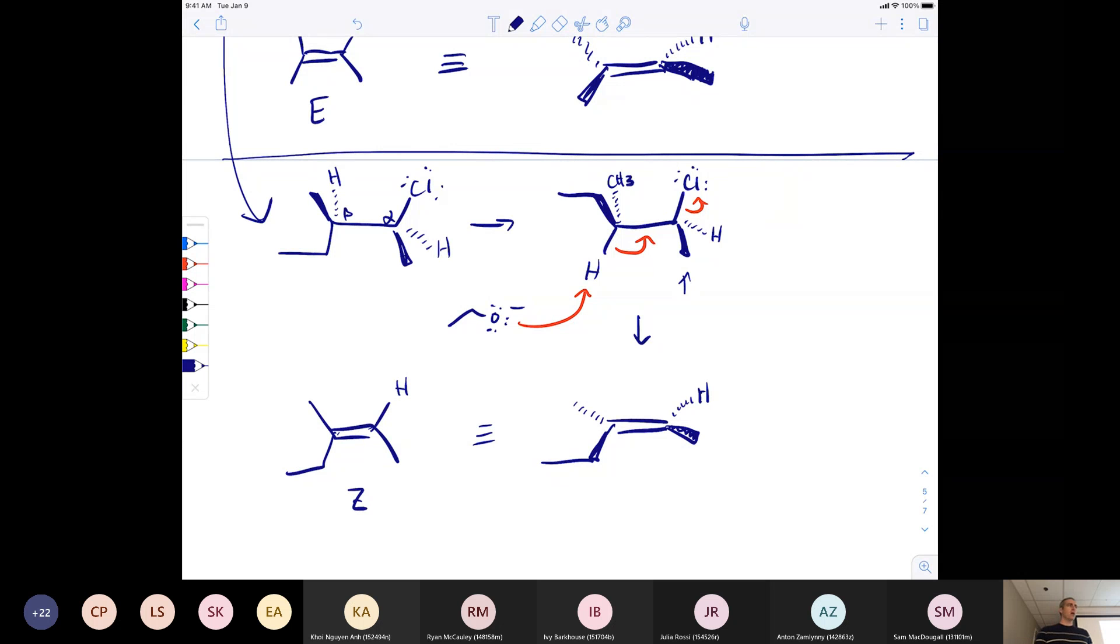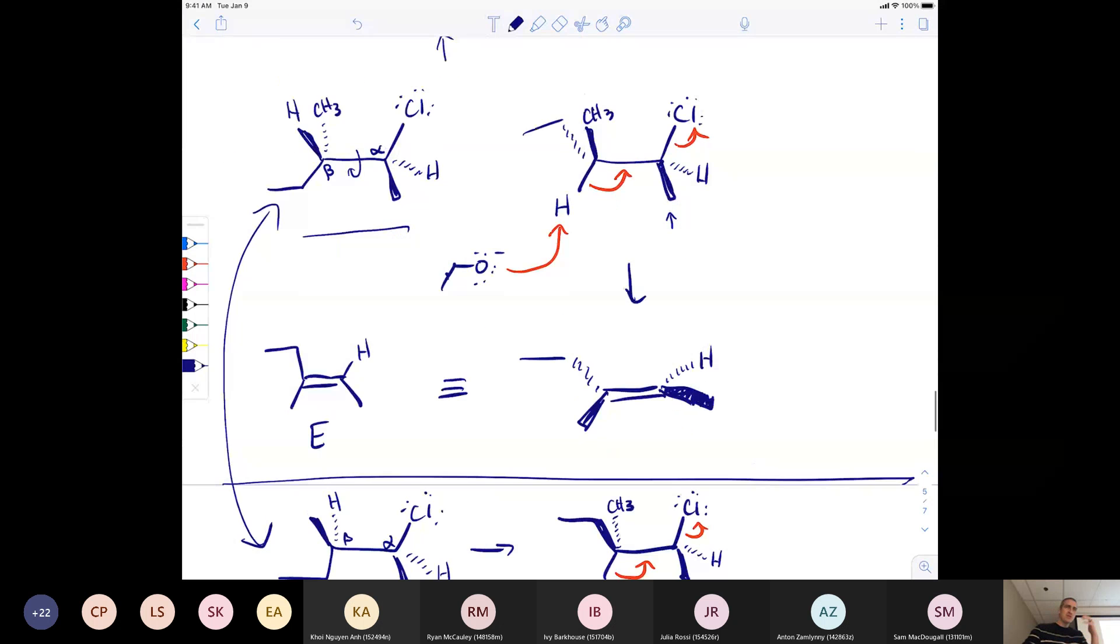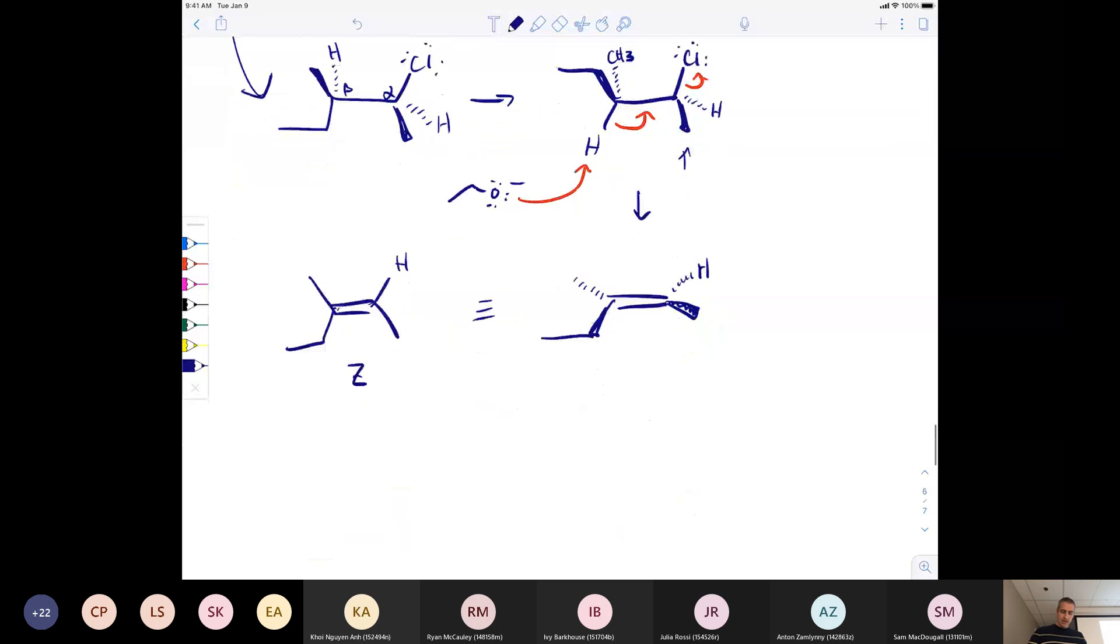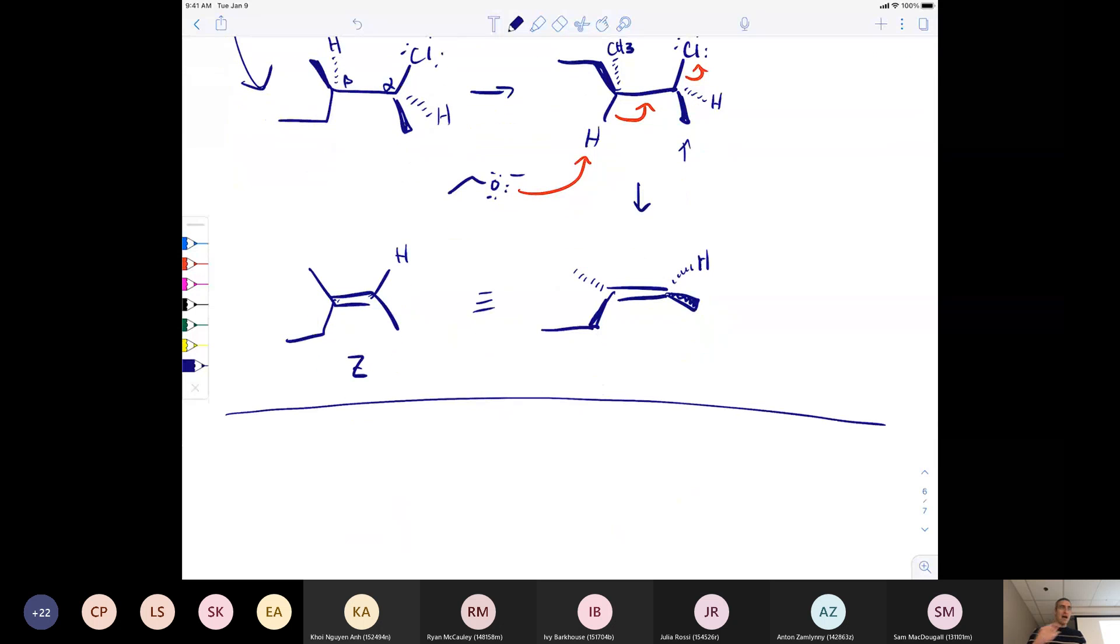We have to rotate this around again to get it into reactive form. The ethyl out in front pushes the methyl into the back. This one is Z. Notice how in the top example, one diastereomer gave us the E, a different diastereomer gives us the Z. These two products are diastereomers. This is an example of a stereospecific reaction, where a certain stereoisomer of starting material gives us a certain stereoisomer of product.